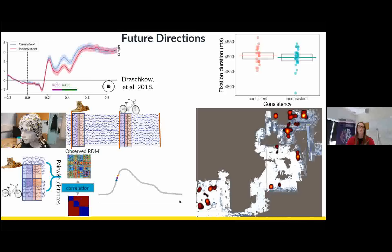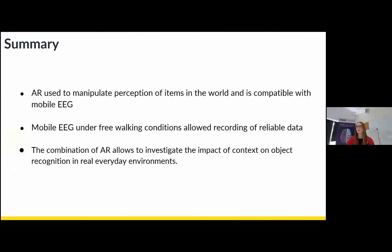So that's as far as we've gotten. So just to summarize, it seems that we can use this mobile EEG setup, mobile and augmented reality setup to get some reliable visually evoked responses. And hopefully once we've collected all our data, we can use this to see whether there's an impact of context on object recognition in the real world.